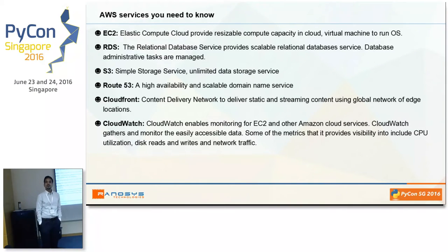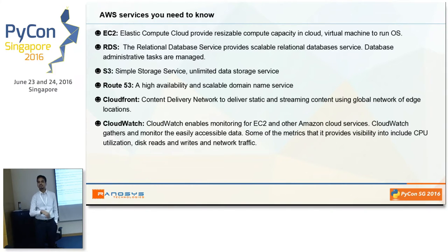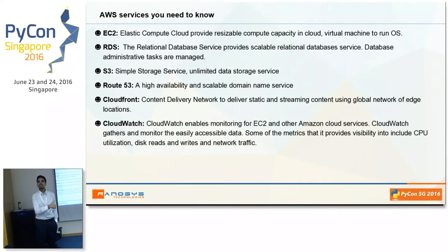One service also is Route 53. Route 53 is a scalable domain name service. It's very easy to use — you just point your domain controller's name server to the Route 53 DNS server, and you can map your domain to any particular EC2 instance or load balancer URL, so your users can access the services.